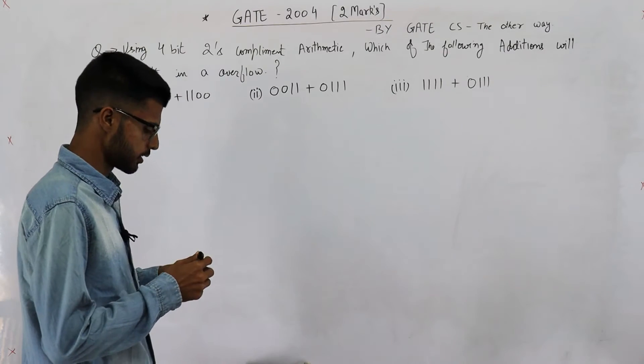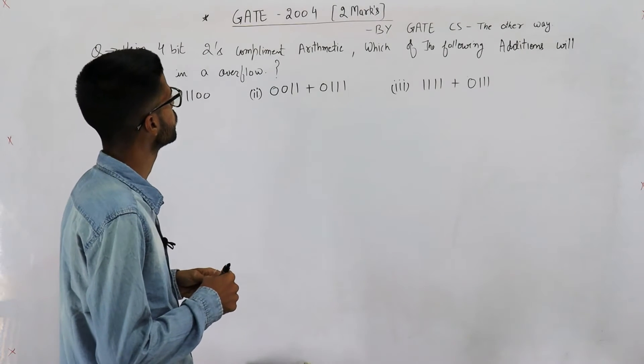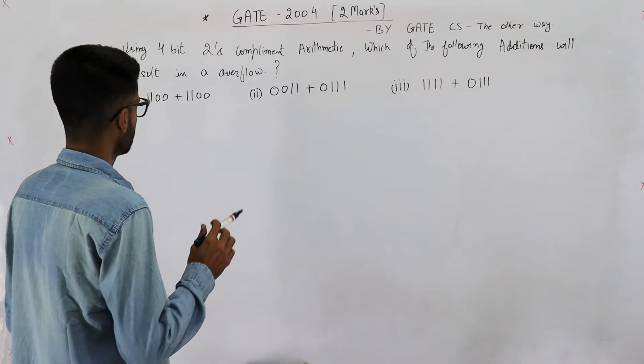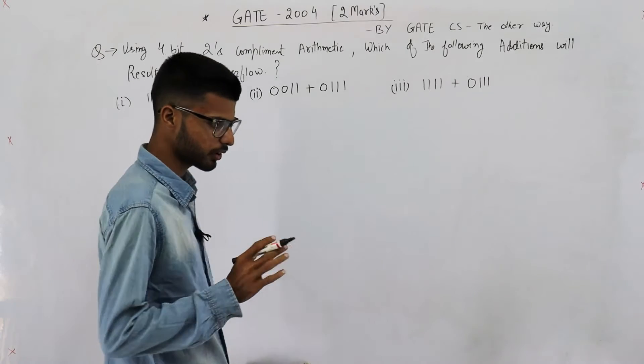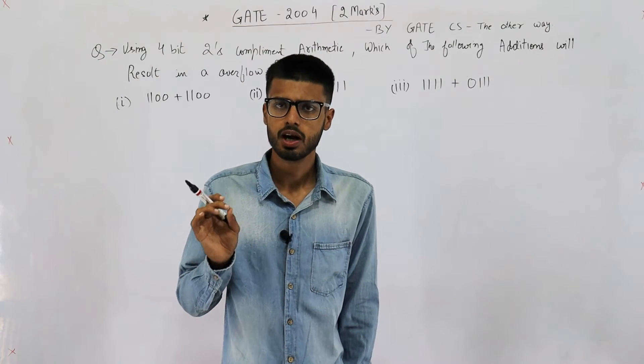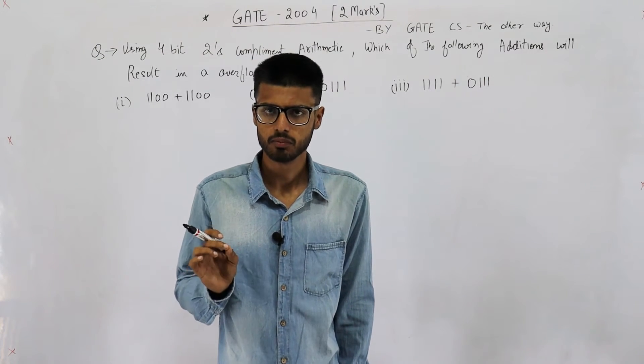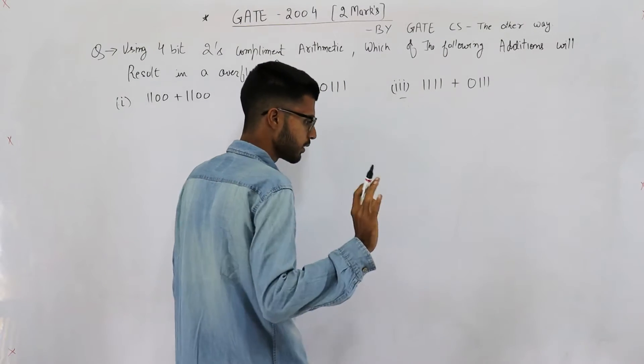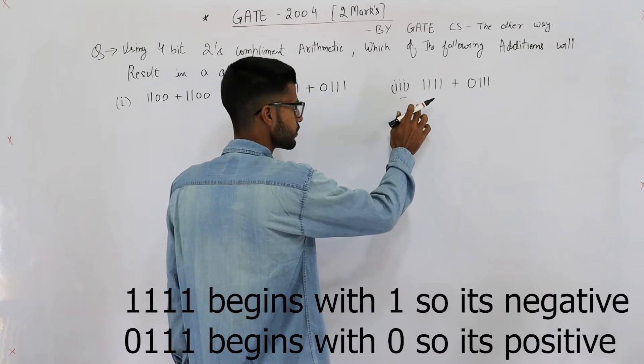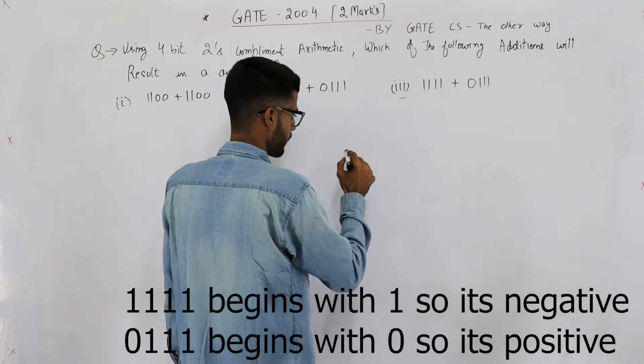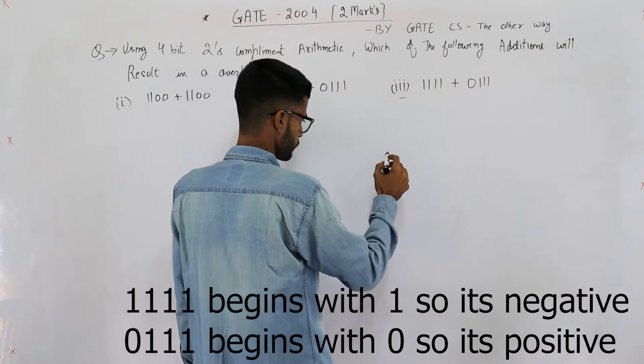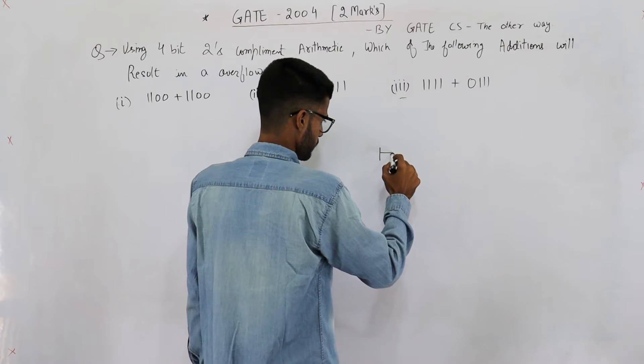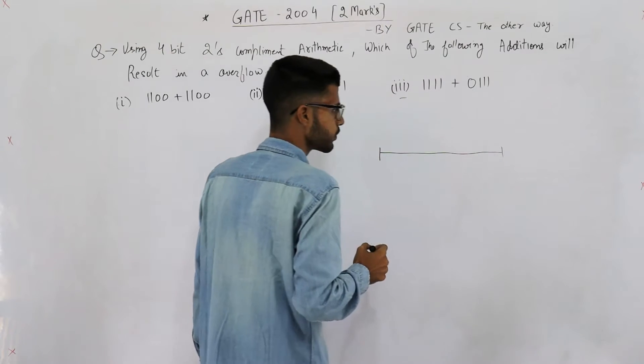Let's see this GATE 2004 question regarding overflow in 2's complement addition. First thing: when you add a positive and a negative number, there is no chance of overflow. For example, you cannot have an overflow in this option ever.